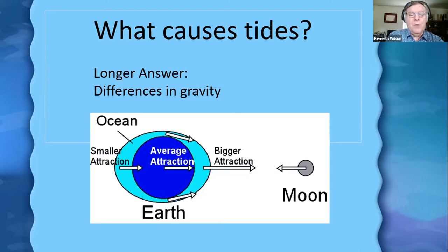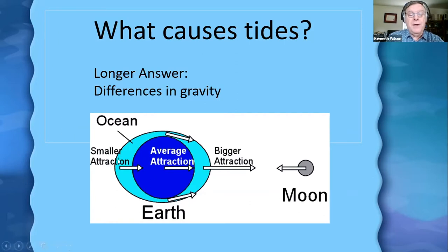If we consider the force of gravity that the Moon has on the Earth, the point on the side of the Earth closest to the Moon feels the strongest gravity from the Moon. On the other hand, on the side of the Earth away from the Moon, being farther away, that point would feel less gravity. And a point in between — say, the center of the Earth — there'd be an in-between gravitational pull there.